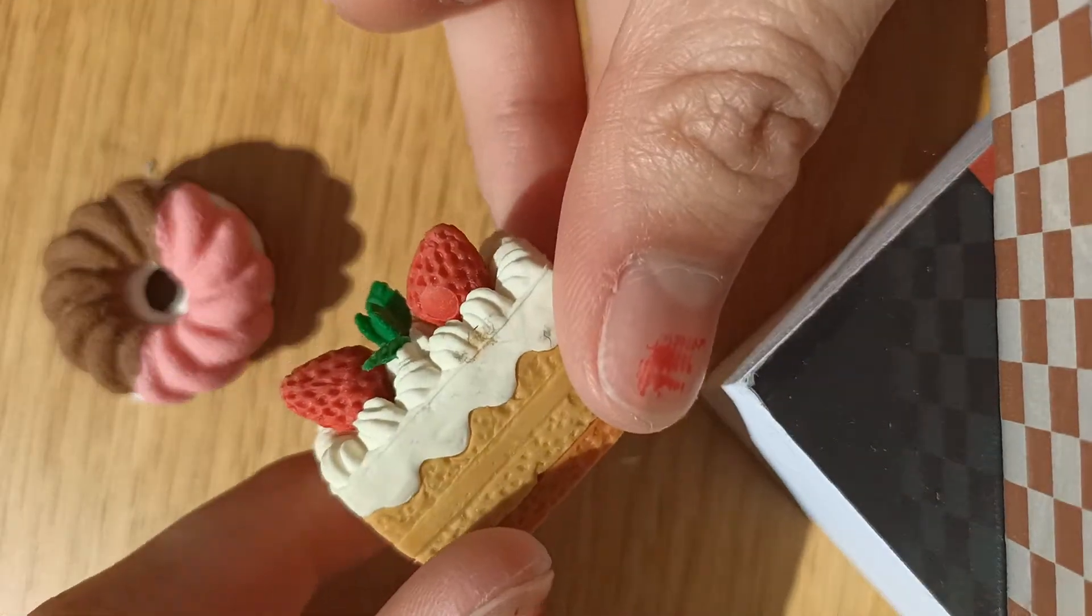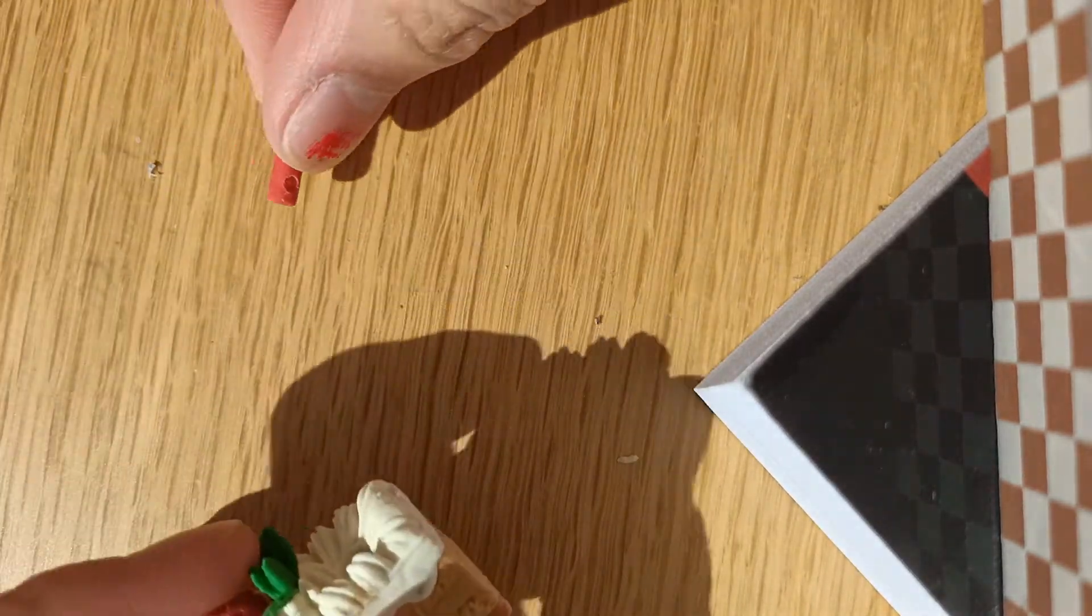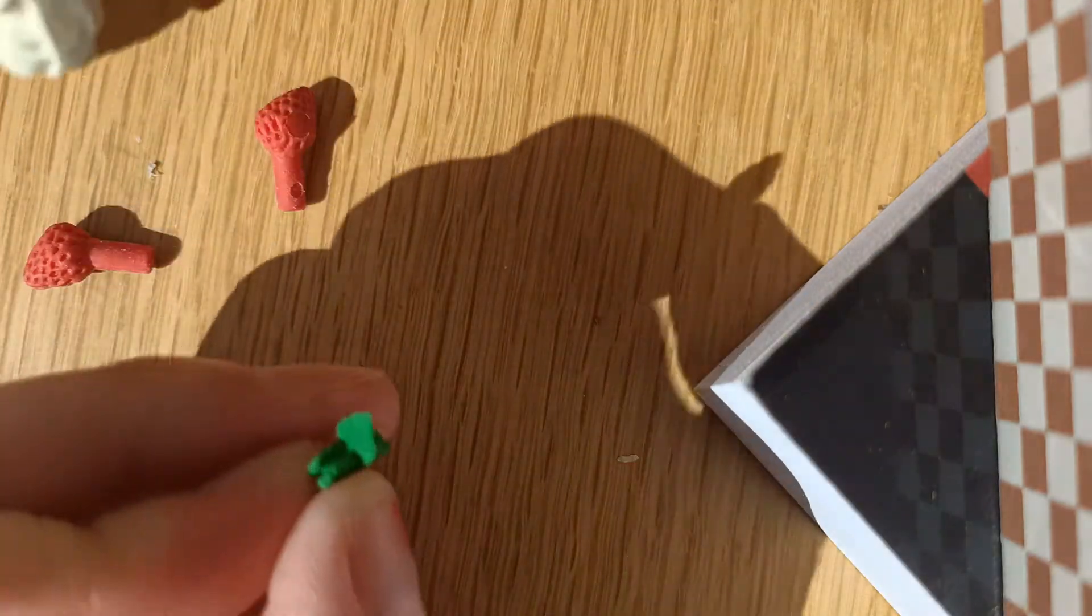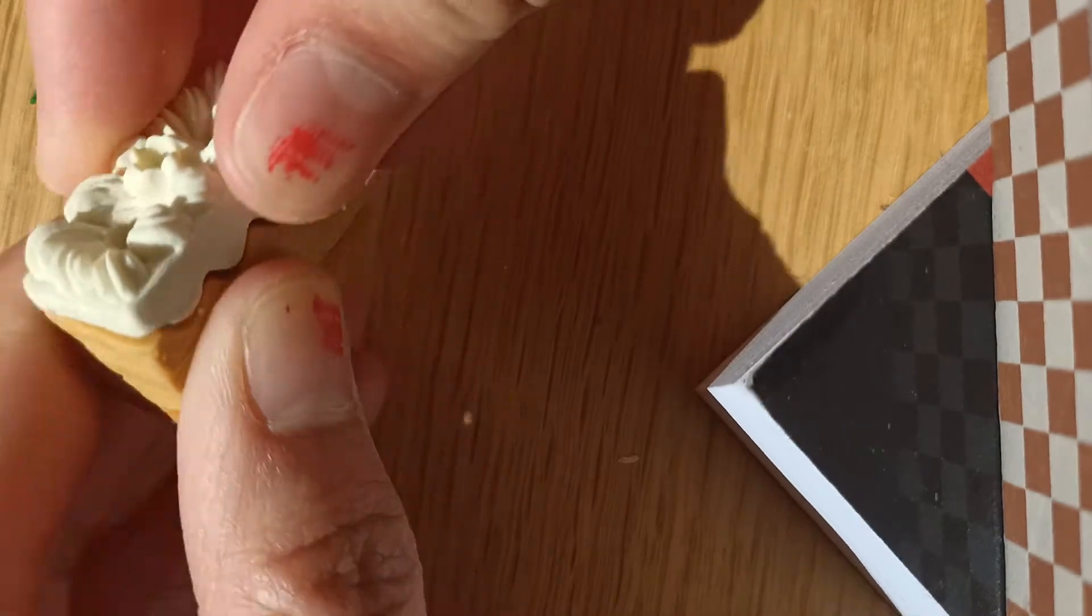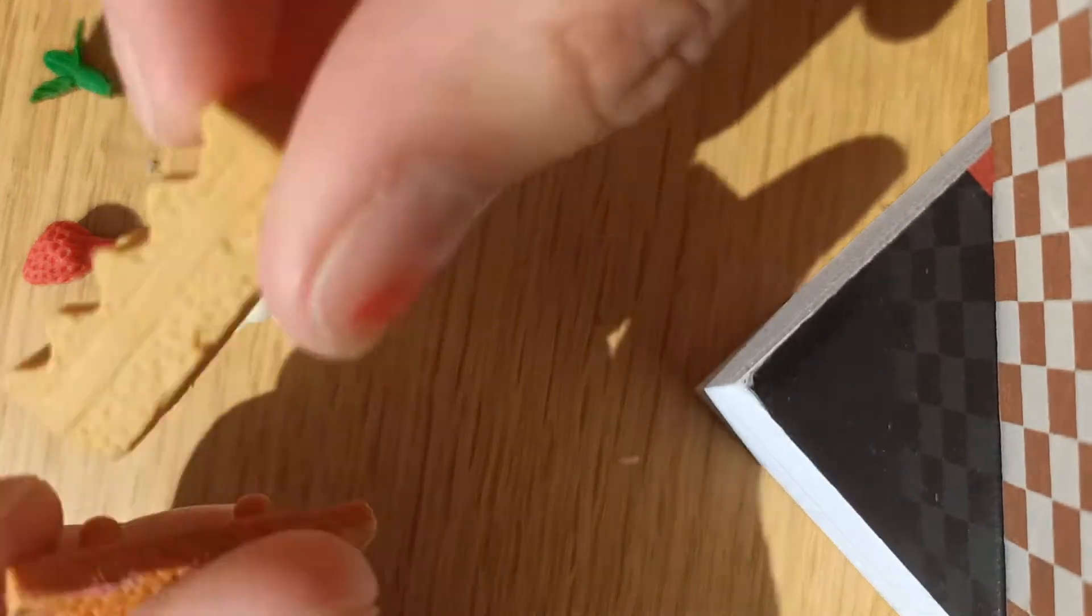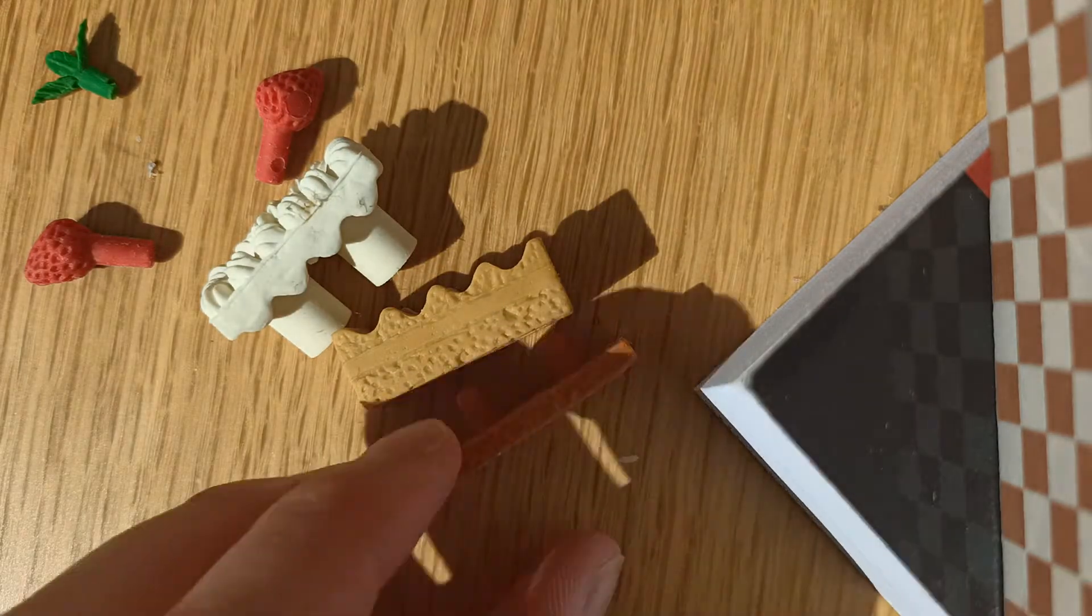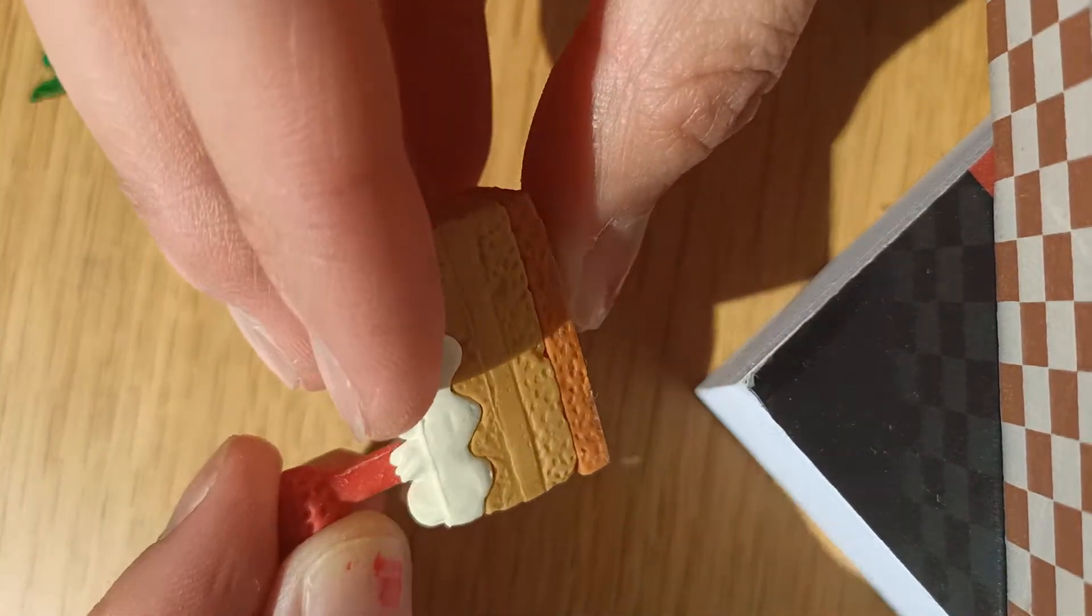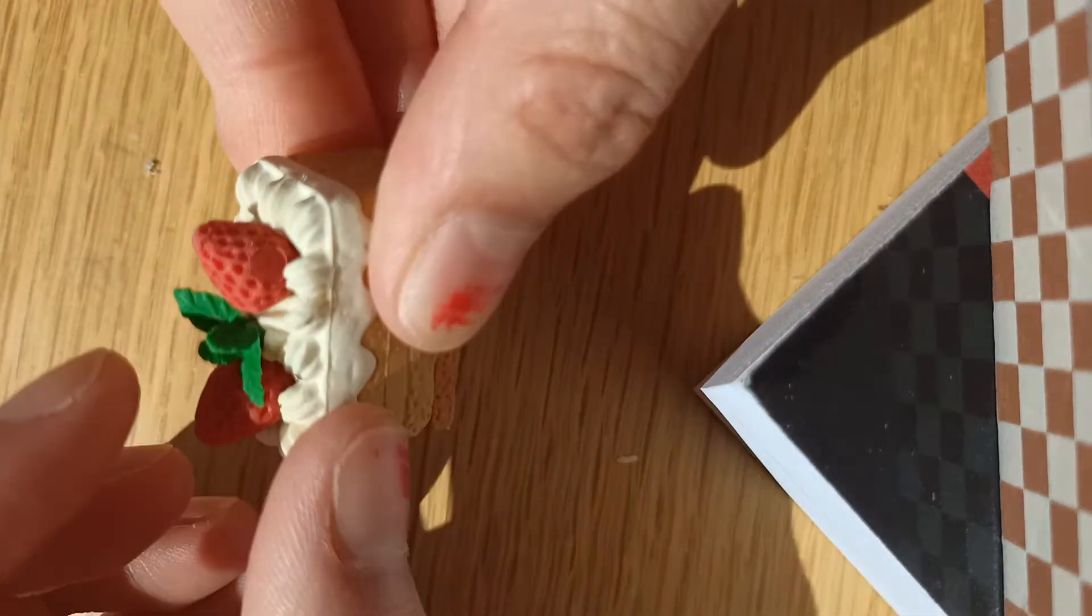Another food one is this cake. Actually, I think this one was my favorite. It has the most parts. Got two strawberries, a mint leaf. Wow, the shadows are really intense here. And then you have the cream on the top, and two layers right here. There we go.